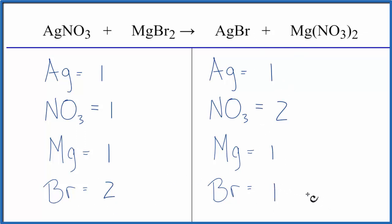Why don't we fix the Brs first? We could just put a 2 in front of the AgBr. So we have 1 times 2, that'll give us two Brs, those are balanced.